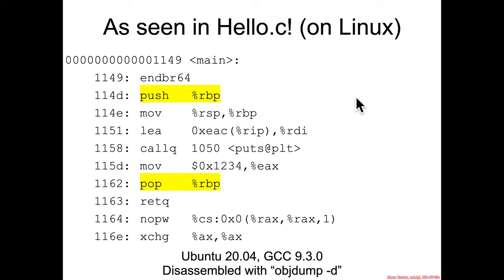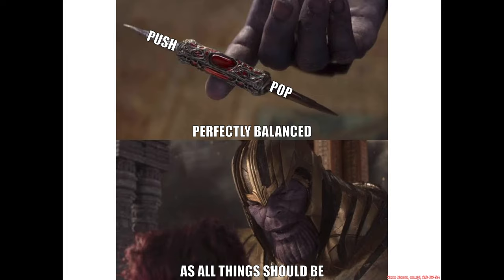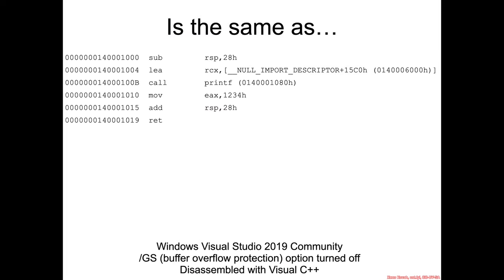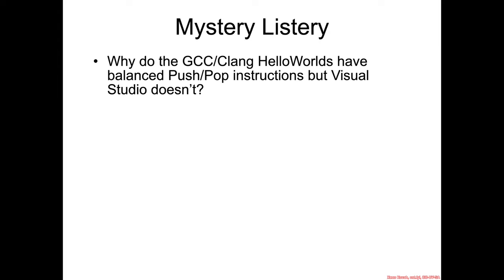While we may not yet know exactly what they do, we know that they're perfectly balanced — as all things should be. However, we did not actually see push and pop in the Visual Studio generated assembly. I'm going to start a mystery list of things we'll have to come back to later. We don't know exactly why GCC or Clang's hello worlds have push and pop instructions but Visual Studio doesn't, but I promise we'll get back to it and explain it.